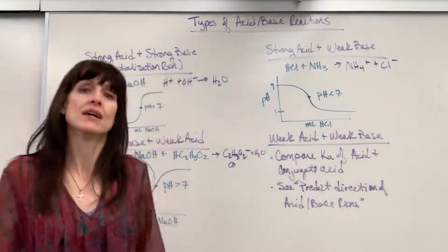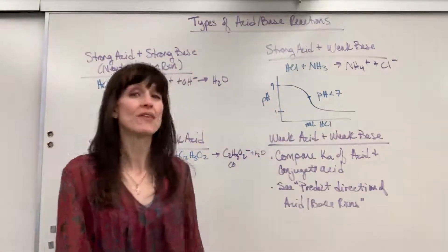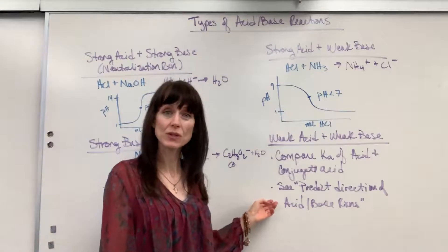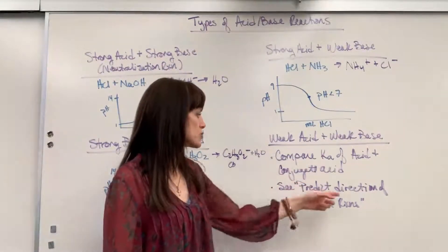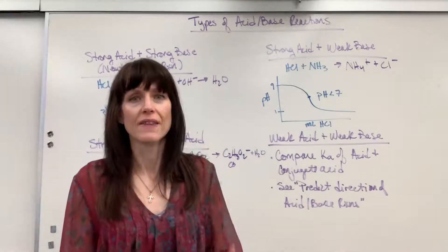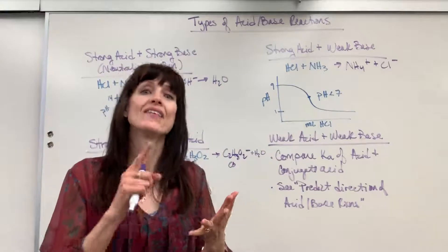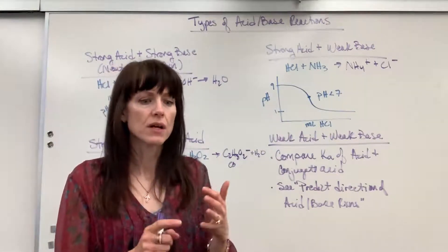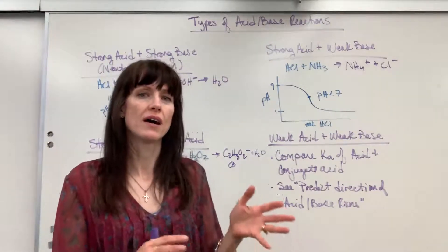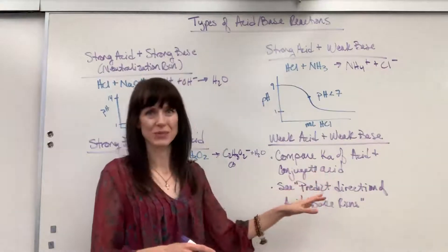Now, the last option that we could have is weak and weak, when we have a weak acid and a weak base. So I have a recommendation on this. I want you to go and watch my video under Acid Base Equilibrium, that playlist, where it says Predict Direction of Acid Base Reactions. You have to compare the Ka values, the Ka of the acid and the conjugate acid. Whichever Ka value is largest, the reaction will lie on the opposite side. And that video explains it really well.